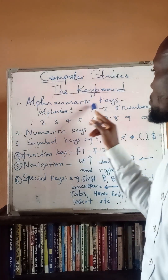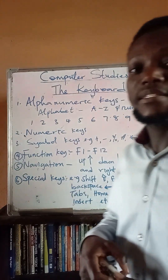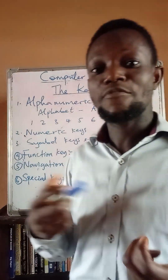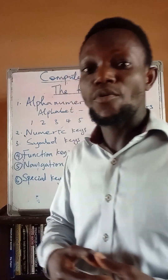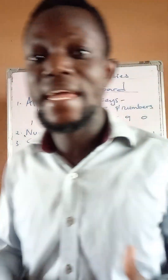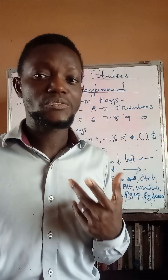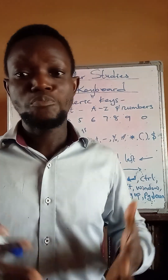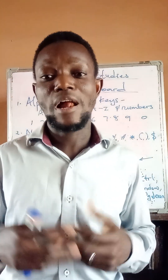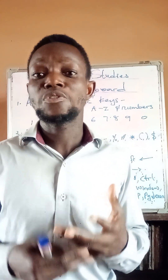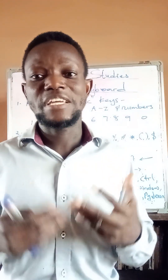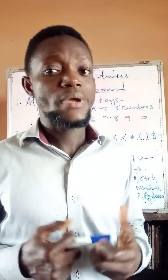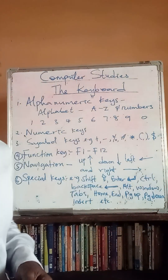First, the alphanumeric keys. As the name implies, alphanumeric means alphabet and number keys, which comprises alphabets and numbers. Your alphabet ranges from the letter A, B, C, D, down to Z, though they are not arranged in a specific order. There is a need for you to learn the location of individual alphabets on the computer keyboard.